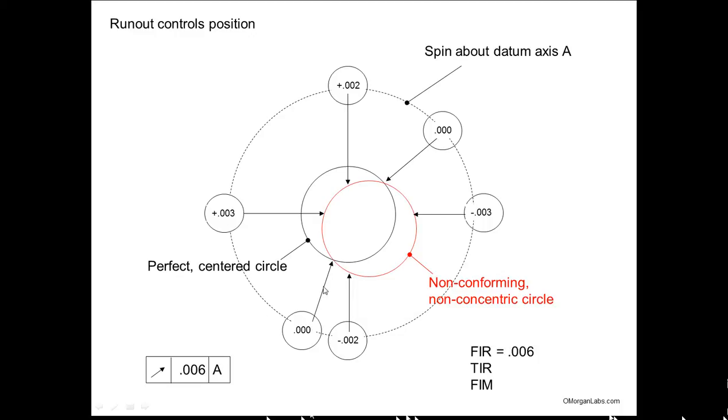And the needle going in and out. And basically, the red is a hypothetical perfect circle, but it's off center. So your runout, your dial indicator would pick that up as you spin about axis A because this is the callout. Six mil runout with respect to A. So you go and you look at the readings.